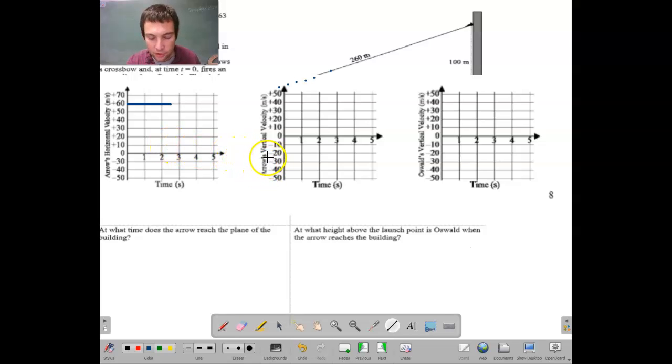And then we have the arrow's vertical velocity. Vertical velocity started positive and then 2.5 seconds later it's going to be at zero.